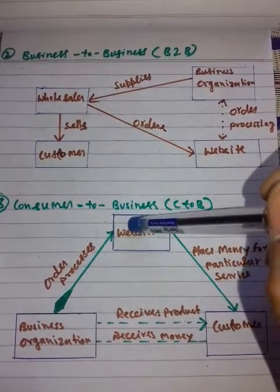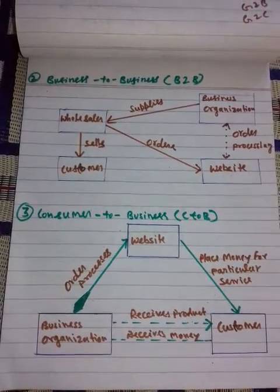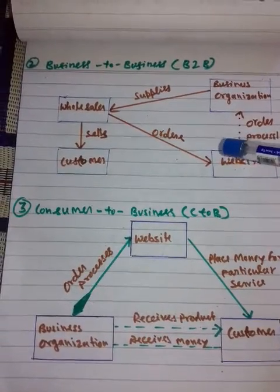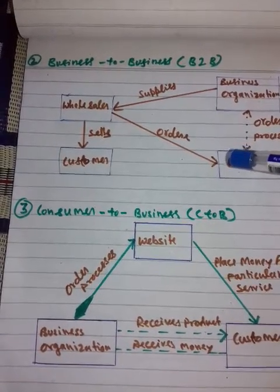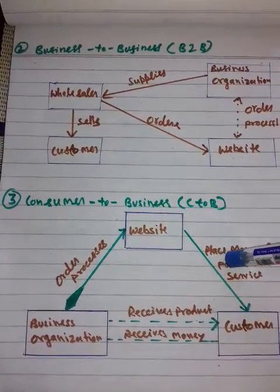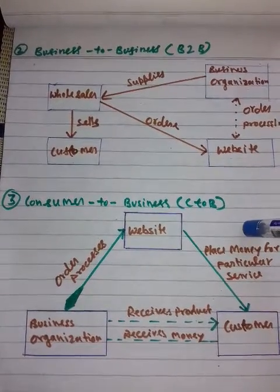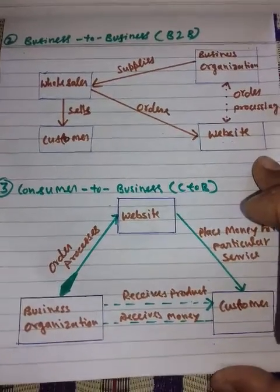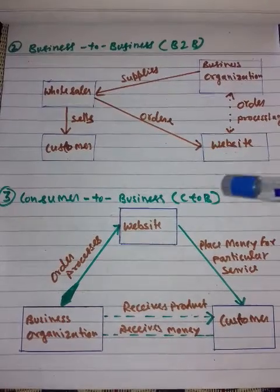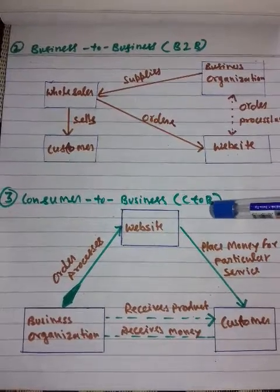The third model is Customer to Business, or C2B. In the C2B e-commerce environment, consumers post their products or services online, on which companies can post their bids. Companies keep their bids open, and customers can also post their bids based on those offerings.